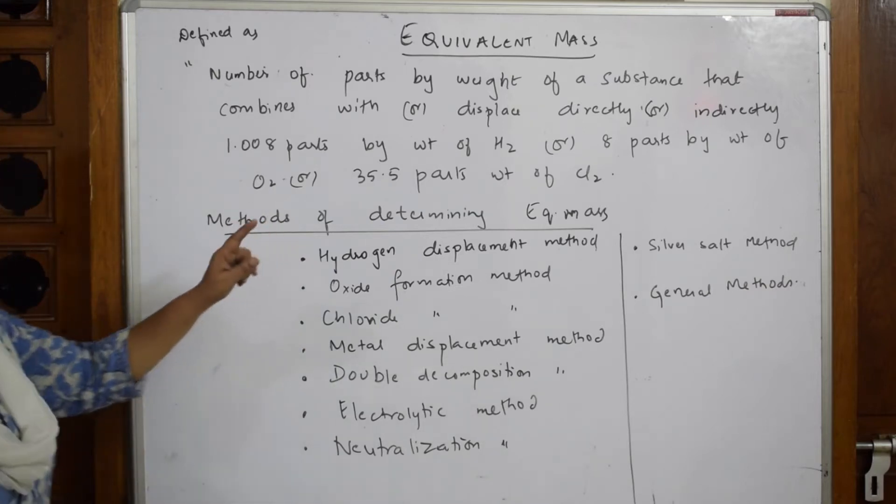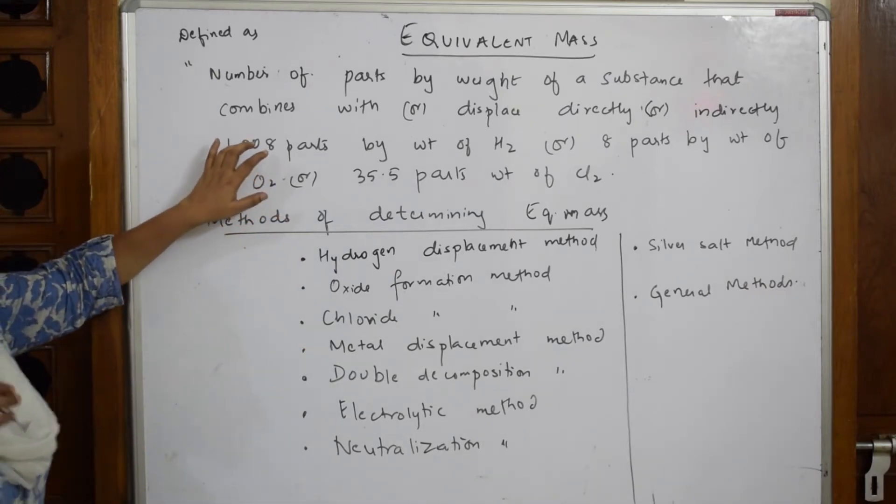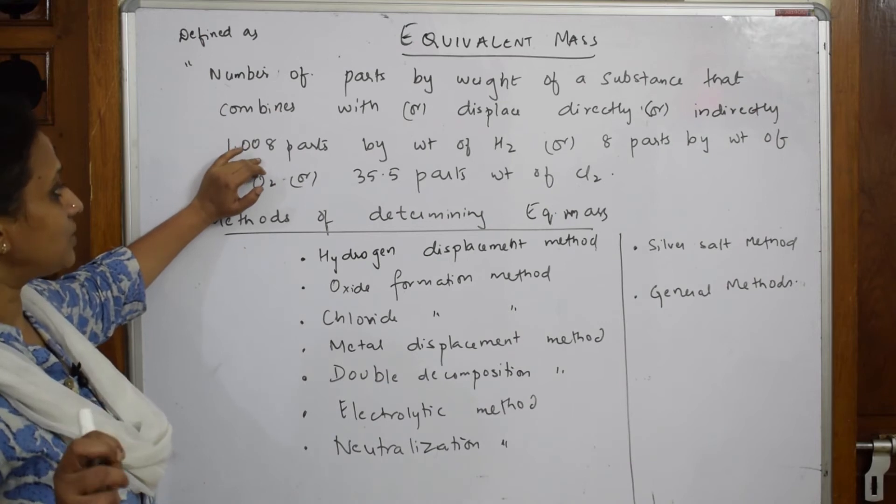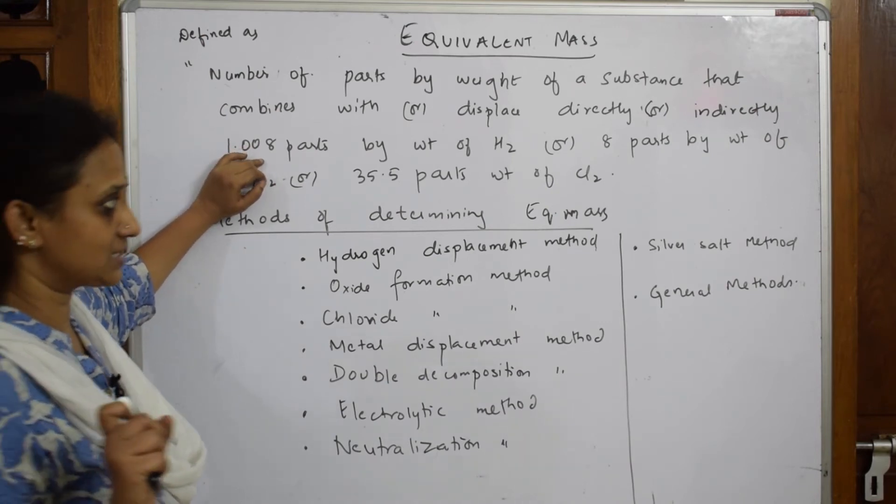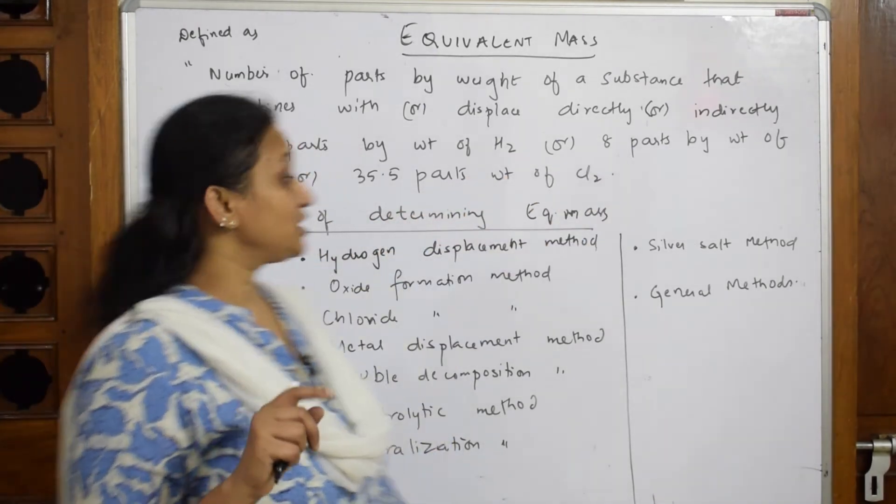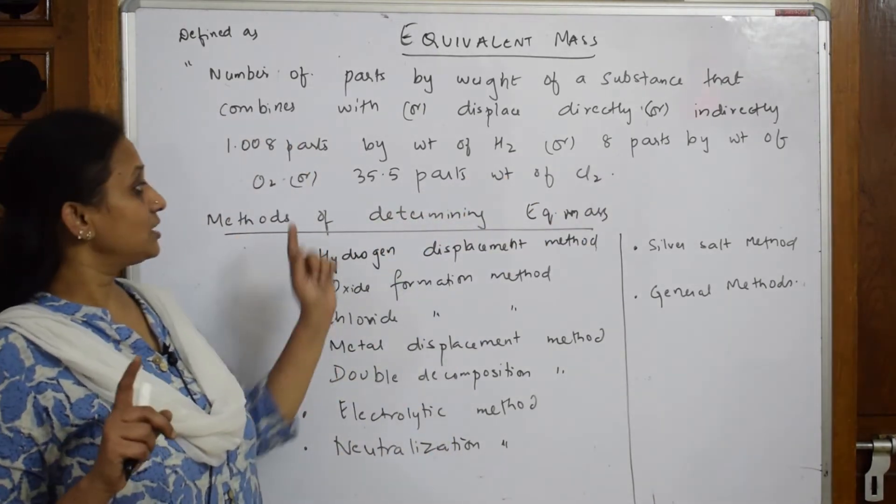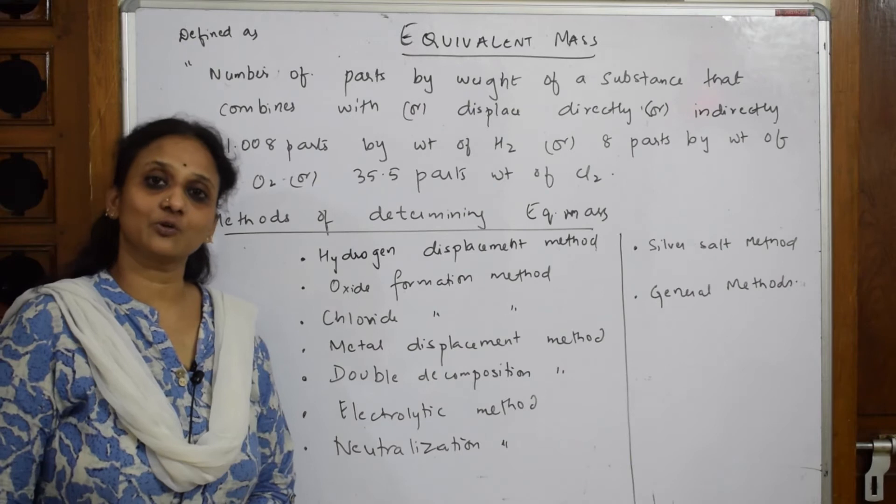Directly or indirectly means when they combine they're going to displace how much by weight: that is 1.008 weight of hydrogen, or 8 parts by weight of oxygen, or 35.5 parts weight of chlorine.